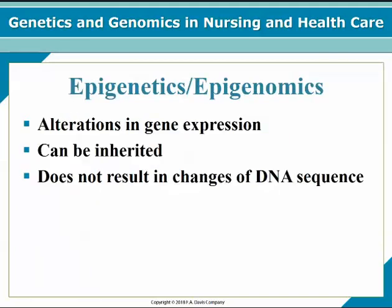Epigenetics and epigenomics are alterations in gene expression that can be inherited and do not result in changes of DNA sequence. So why would future generations be affected? Epigenetics refers to the alterations of gene expression which can be inherited without seeing changes in the DNA sequence.